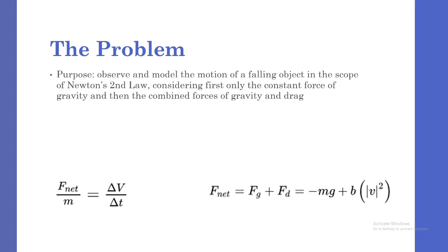The purpose of this experiment is to observe and model the motion of a falling object in the scope of Newton's second law, considering first only the constant force of gravity, and then second the combined forces of gravity and drag. The net force can be calculated by combining the y component of these two forces, being negative mg plus b times the magnitude of velocity squared.